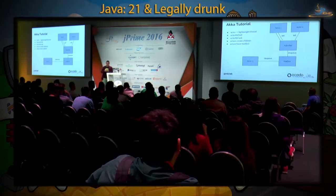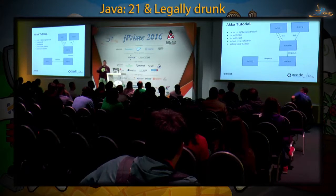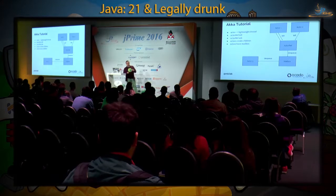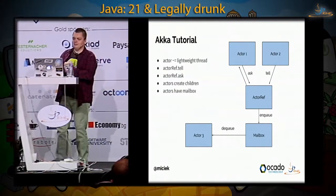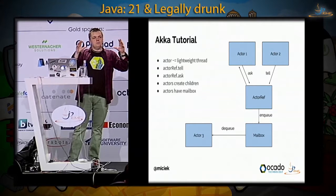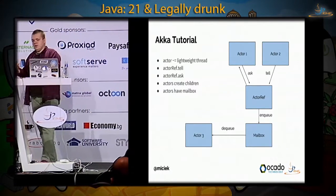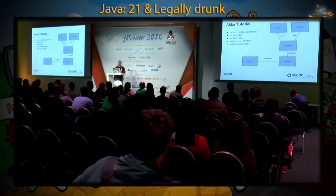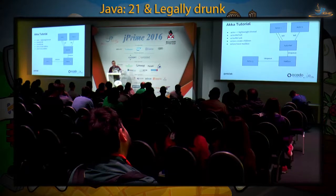Actors can have children. Just like in life, when you create a child, you are responsible for that child. Whenever your child throws an exception or does something unexpected, you are responsible for taking care of it — maybe creating another one. This is called supervision. It's in Akka and in any actor model, so all actors form supervision trees. And the final thing to remember is the mailbox: each actor has a mailbox, and messages are enqueued by other actors, processed one at a time.